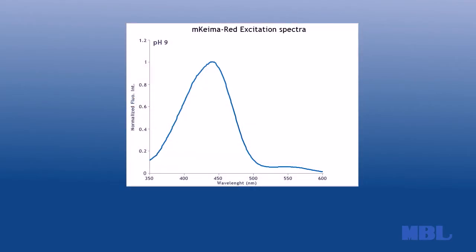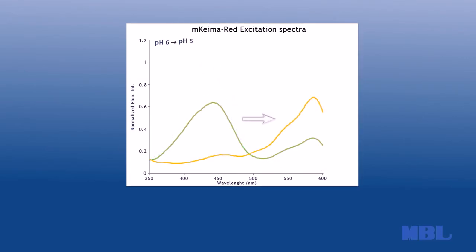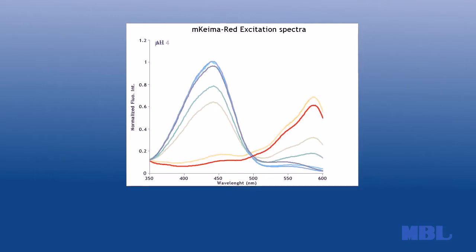A short wavelength of 440 nm is predominant for excitation in a neutral environment, whereas a long wavelength of 586 nm is predominant in an acidic environment.